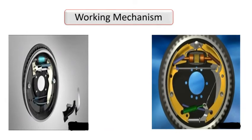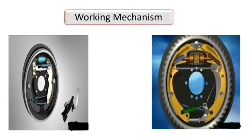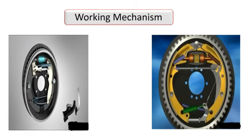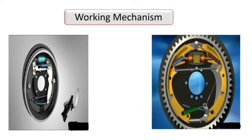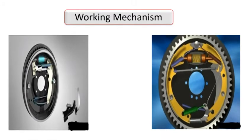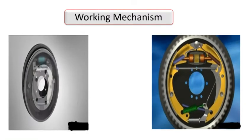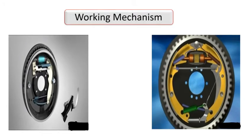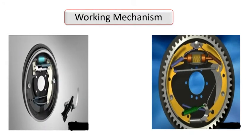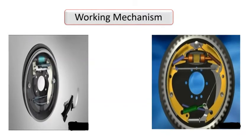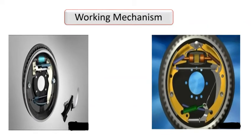How Drum Brakes Work. When the driver steps on the brake pedal, the power is amplified by the brake booster servo system and changed into hydraulic pressure (oil pressure) by the master cylinder. The pressure reaches the brakes on the wheels via tubing filled with brake oil (brake fluid). The delivered pressure pushes the pistons on the brakes of the four wheels. The pistons press the brake linings, which are friction materials, against the inside surfaces of the brake drums which rotate with the wheels. The linings are pressed on the rotating drums, which in turn decelerate the wheels, thereby slowing down and stopping the vehicle.